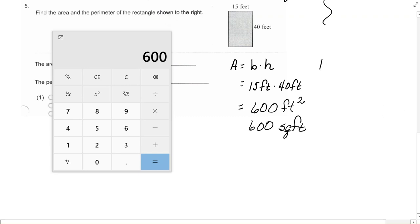Now, the next thing we're going to do is find the perimeter. Remember, perimeter involves addition. It is 15 feet plus 40 feet plus 15 feet plus 40 feet.